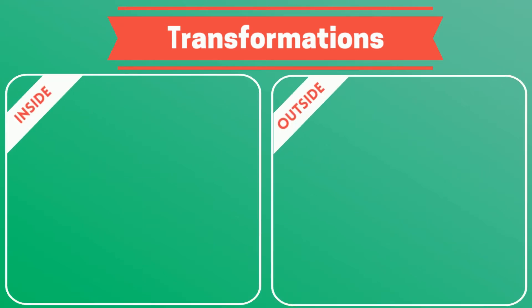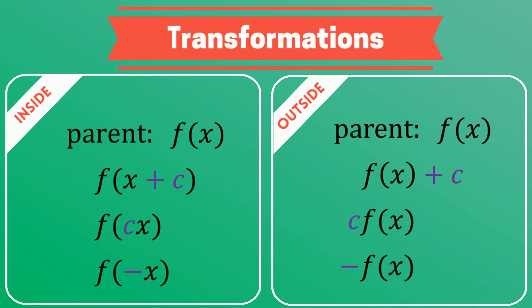Now, when you learn all of the various transformations, you quickly learn that they fall into two categories based on how they affect the parent function. There are the inside transformations and the outside transformations. These, of course, get their names because they can be found either on the inside or the outside of the parent function.